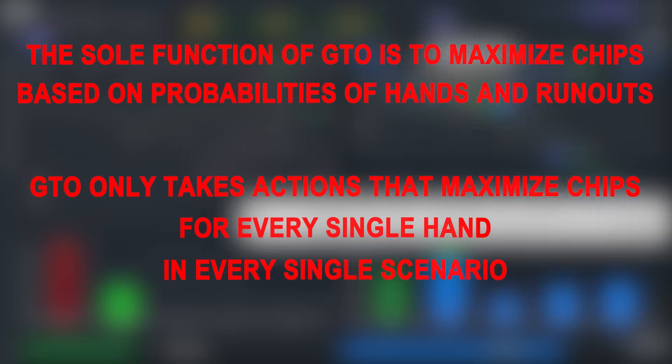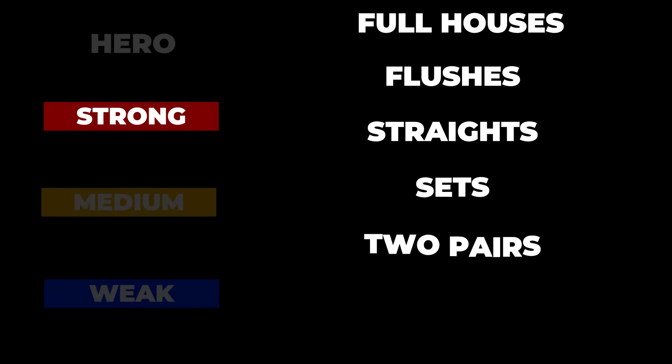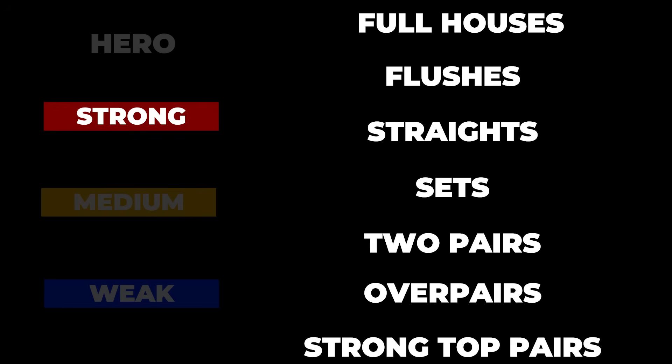To make things easier to digest, let's categorize the types of hands you may get in poker as strong, medium, or weak. Our strongest hands will often include things like full houses, flushes, straights, sets, two pairs, over pairs, and strong top pairs. The primary source of winning chips in poker is by playing large pots when we have hands like these. So when we have a strong hand, we'll often want to bet or raise over multiple streets.